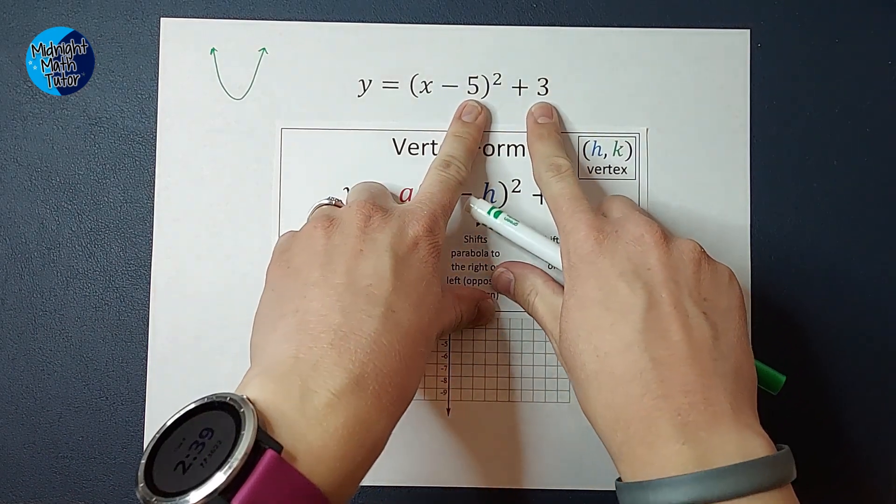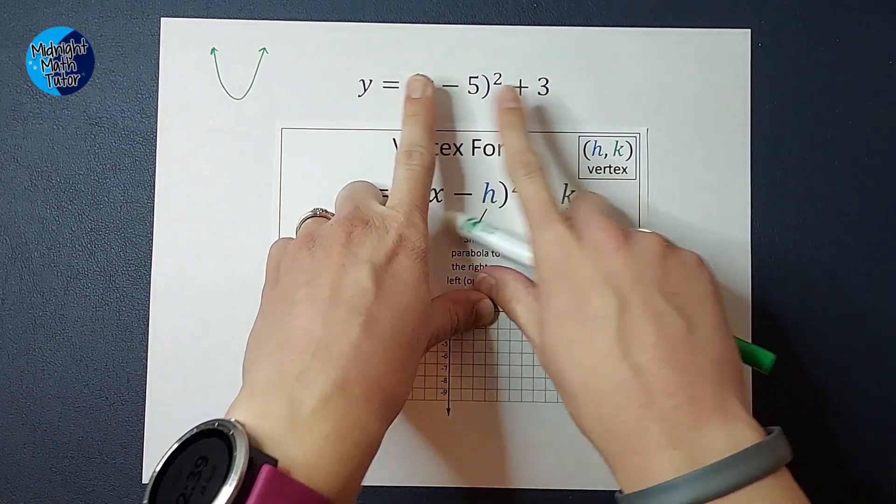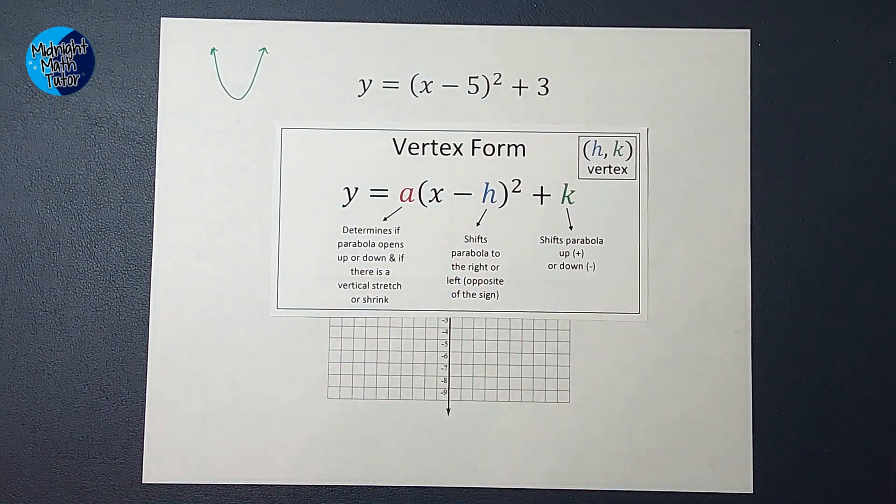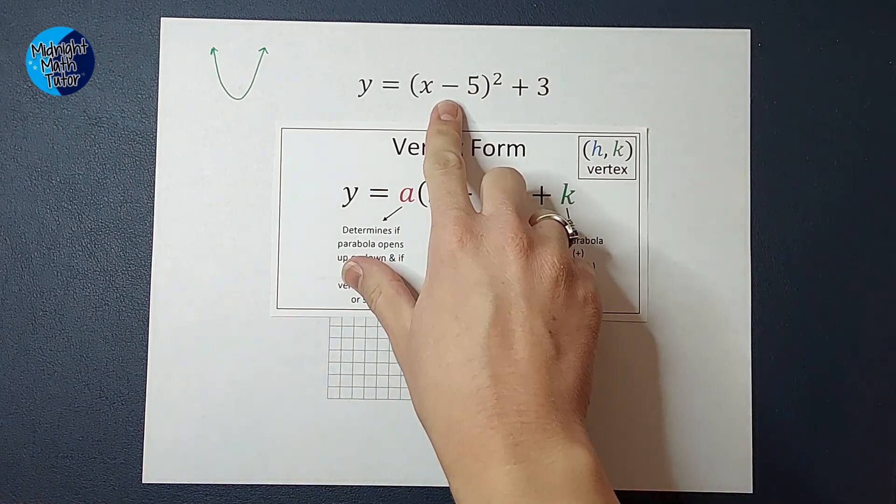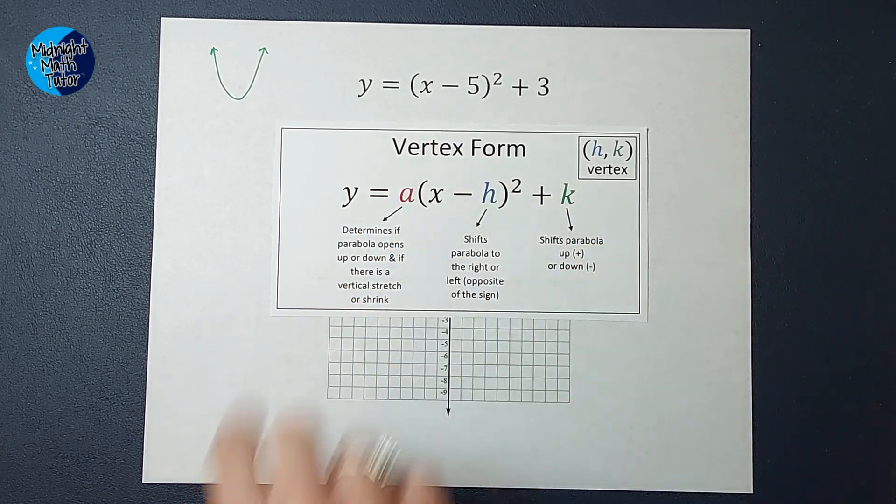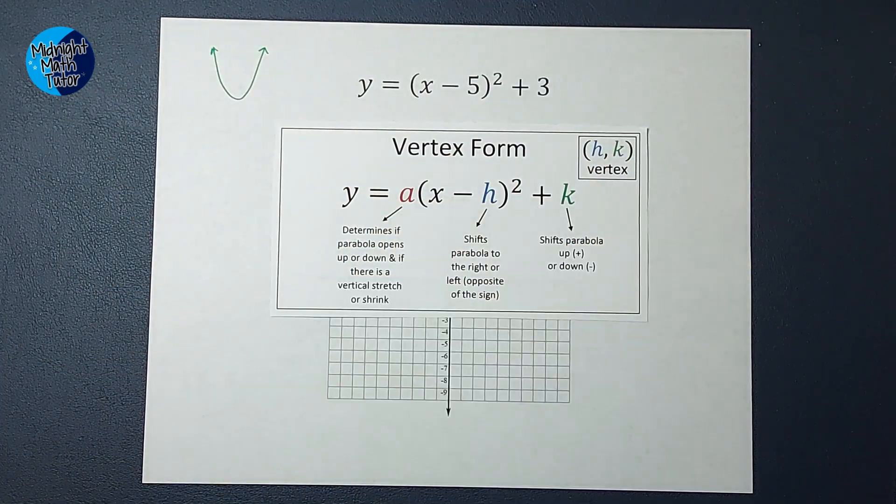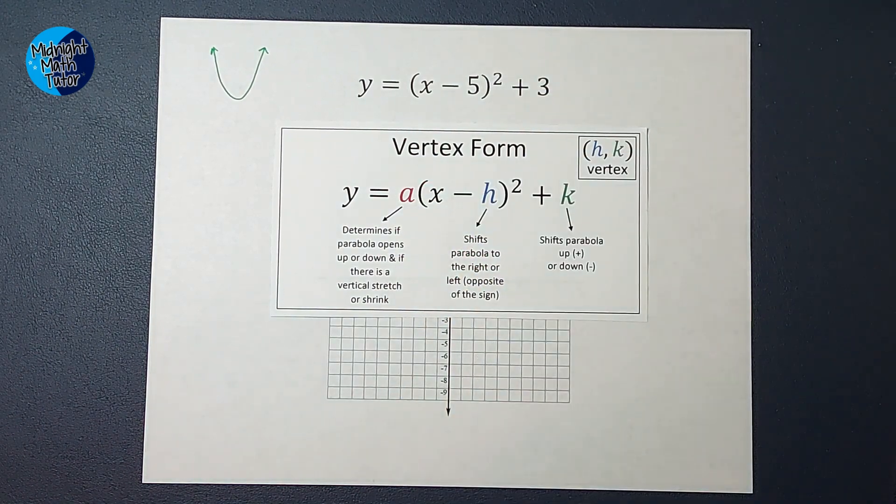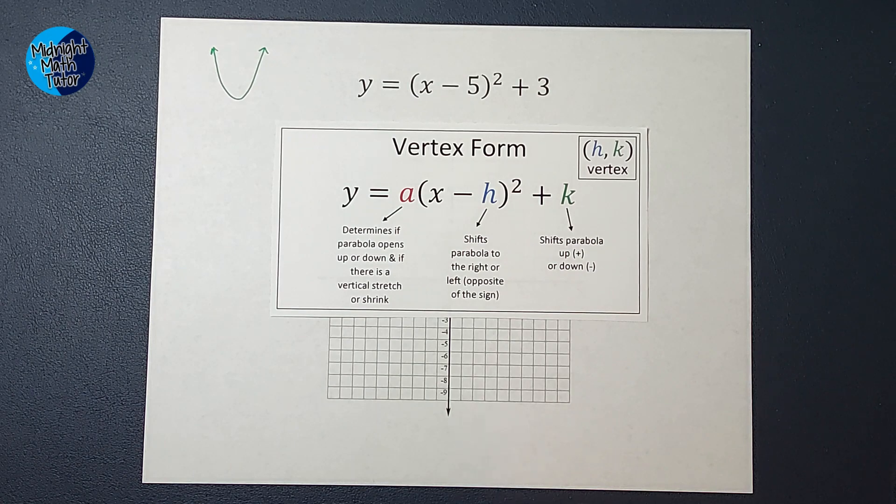Then we've got these two numbers here. This number tells me how much my parent graph is going to shift to the right or left, and you actually go opposite of the sign, right? So on this one, where it's a negative five, we're going to go to the right five. And then the number being added or subtracted on the back is how much my parent graph is going to shift up or down.